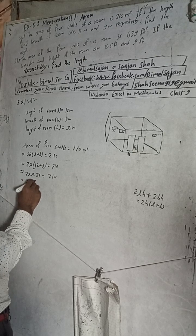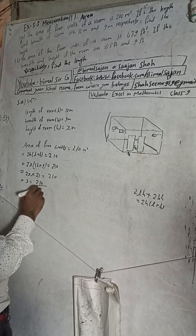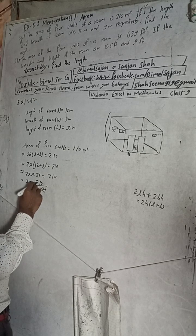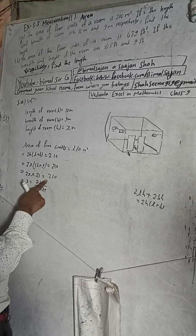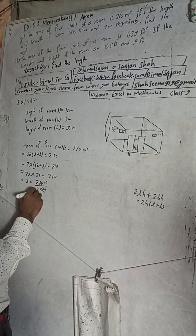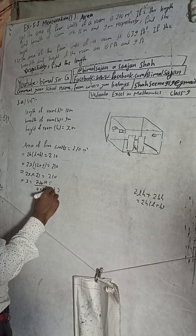So H is equal to 210 divided by 2 into 21. This will be 210 divided by 42, which is 2 divided by 5. So H is equal to 5.